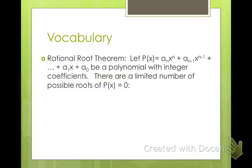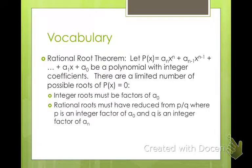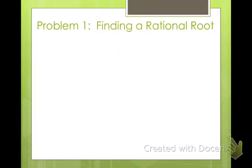So our vocabulary. If we let P(x) = a_n x^n + a_(n-1) x^(n-1) + ... + a_1 x + a_0, be a polynomial with integer coefficients, there are a limited number of possible roots that P(x) can have. The integer roots must be factors of a_0, whatever your constant is, and they also have to be factors of your coefficient of your largest power. So you have to take your factors of your constant divided by your factors of your leading coefficient, and those are your possible solutions.